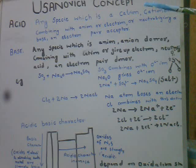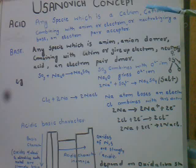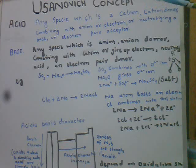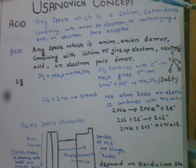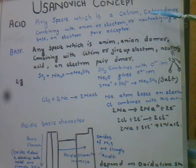Bronsted-Lowry concept ke mutabiq, conjugate acid woh hoti hai jo proton accept karke Bronsted base se banti hai. Jab Bronsted base proton accept kare, to use hum conjugate acid kehte hain. Jab H2O ya NH3 Bronsted base ke taur par kisi doosre substance se proton accept kare, to yeh naya species banta hai.